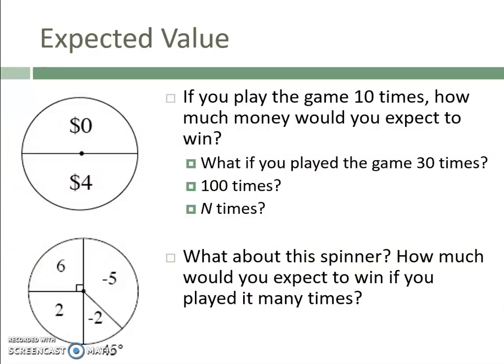Let's talk about expected value. If you look at a spinner split down the middle — half zero and half four — and you play this game 10 times, you'd expect to land on zero five times and four five times, giving you $20. If you played 30 times, you'd land on four 15 times for $60. If 100 times, 50 times on four for $200.